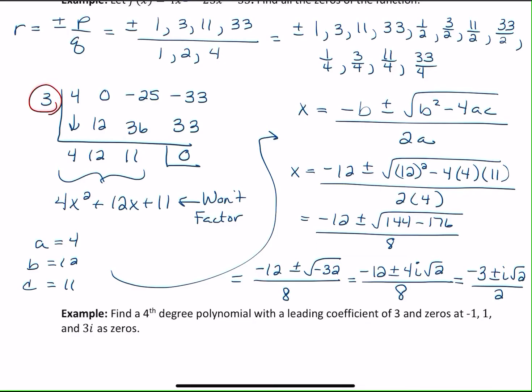So our three answers here, we've got the 3, and then we have the negative 3 plus i square root of 2 over 2 and negative 3 minus i square root of 2 over 2. Okay, this next one, it's a little different.